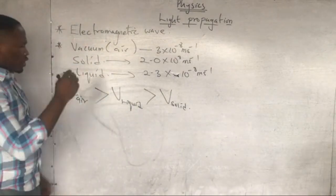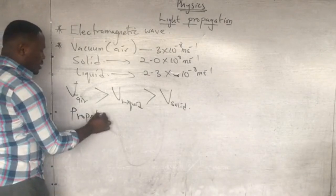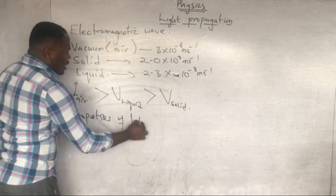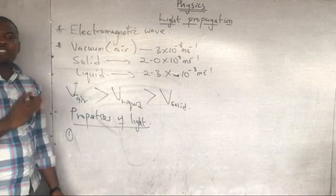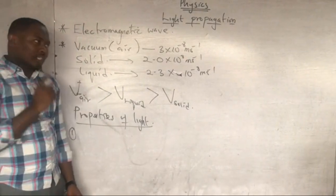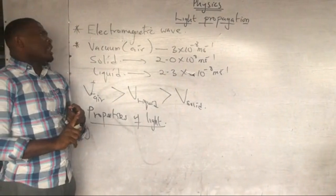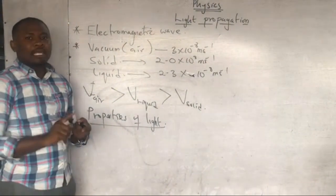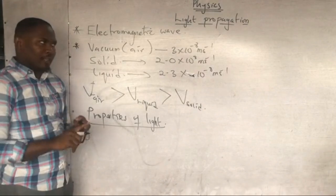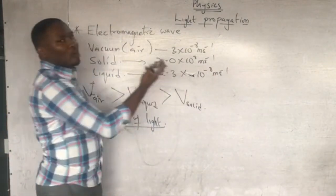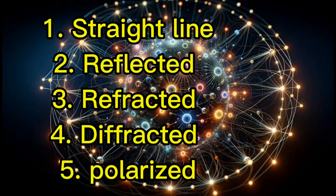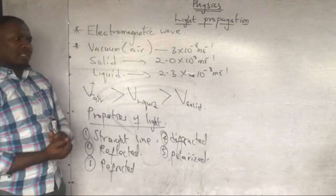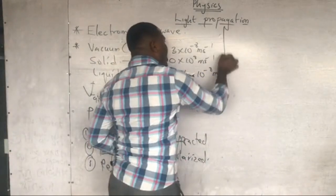These are all called properties of light. The first property is that light travels in a straight line. Another property of light is that light can be reflected — it means light can strike an object and bounce back. Light can also be refracted, diffracted, and polarized.